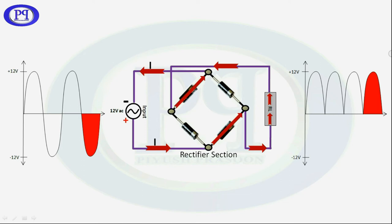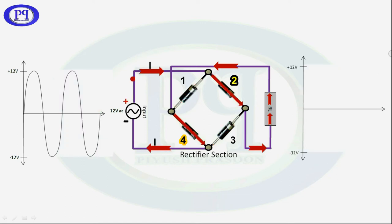Now let's analyze it in a different manner so that you could understand it properly. So in positive half cycle I would like you to notice the polarity at the input terminals of the rectifier as well as the flow of current.